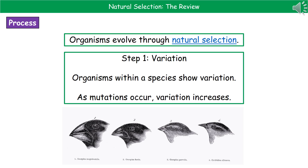We know this because of the work of Charles Darwin. We're going to look at the different steps involved in the process of evolution by natural selection. The first step is that within any particular species of organism, there is variation. And as we get different mutations occurring, variation will increase.